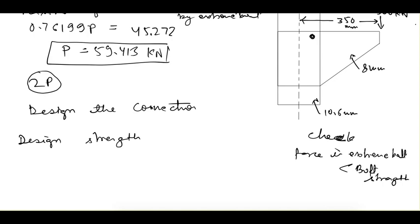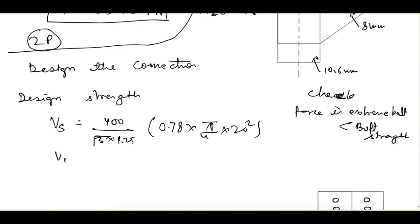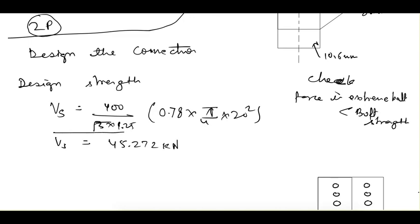First let's find out the design strength. We have used M20 bolts of grade 4.6. V_ds, the shear strength — since it is a lap joint, shear strength will be the same as the last one: 400 by root 3 into 1.25 multiplied by 0.78 into pi by 4 into 20 squared, and that is equal to 45.272 kN.